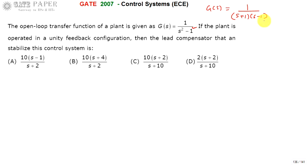You can make this open-loop transfer function stable by considering the closed-loop system along with a lead compensator, used in a unity negative feedback configuration. The question is: which lead compensator transfer function will give the system stability and make the system stable?